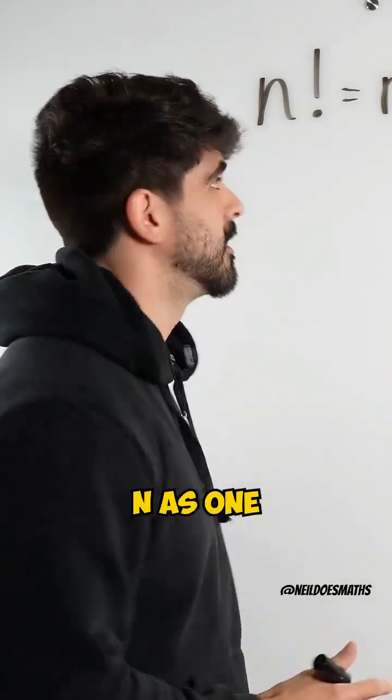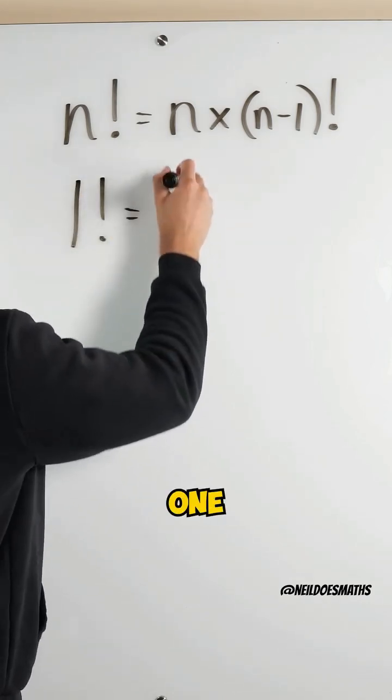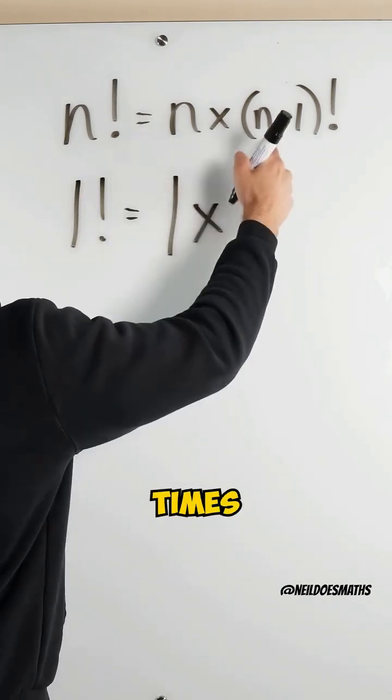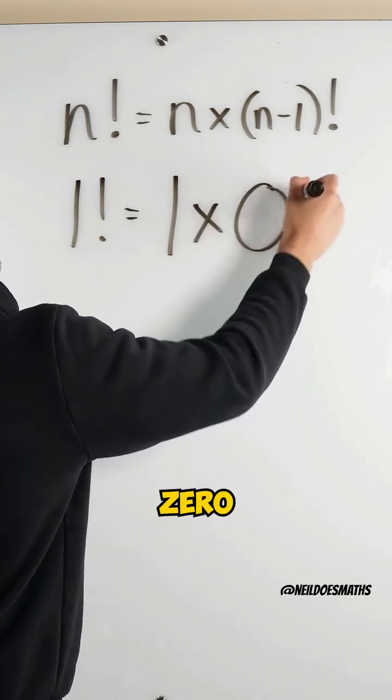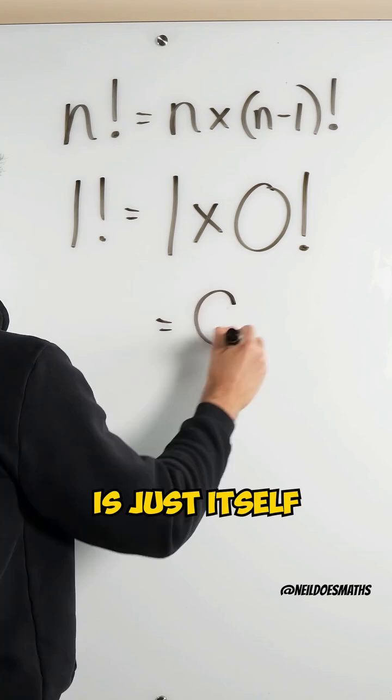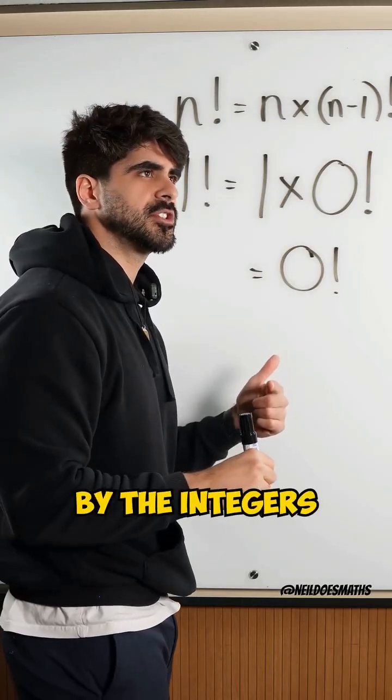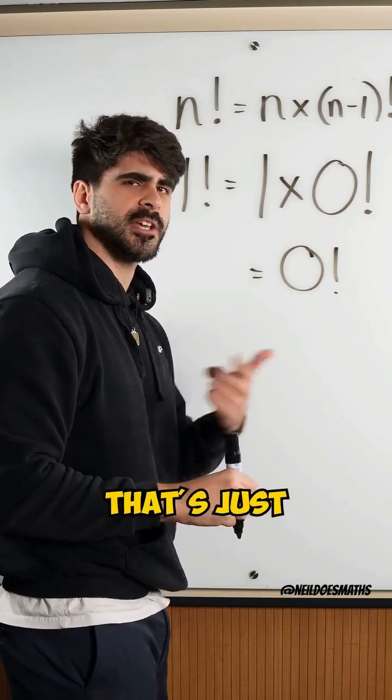Now let's substitute n as one. We get one factorial is one times one minus one, which is zero factorial. One times anything is just itself. One factorial means one multiplied by the integers that precede it down to one. That's just one.